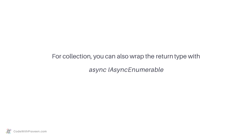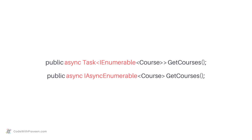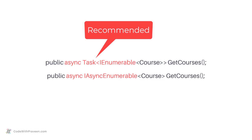Moreover, when working with collections in Web API projects, ASP.NET provides another feature: you can wrap the return type with IAsyncEnumerable instead. For example, for the same GetCourses method, it becomes public async IAsyncEnumerable of Course, GetCourses. The behavior is exactly the same as the previous method, but the difference is very subtle. Among these two approaches, I generally prefer the first approach of using async and Task keywords.